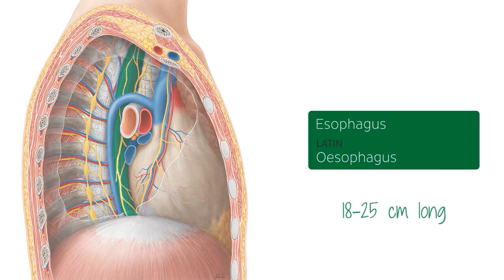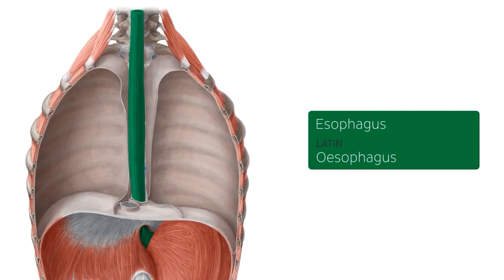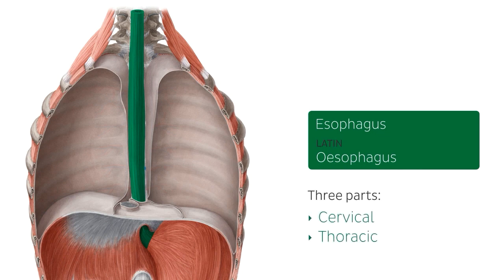Now we can see the highlighted esophagus from an interior view of the thorax. The esophagus can be divided into three parts: a cervical part, a thoracic part, and an abdominal part. We're going to be highlighting each of these on the next slides.